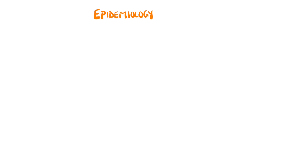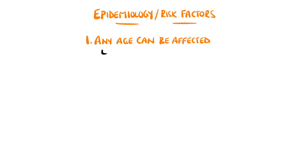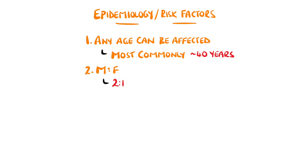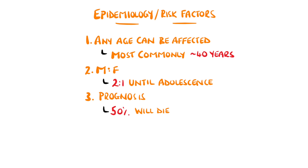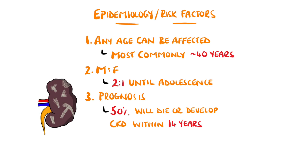Although any age can be affected, it is more common in adults, particularly around the age of 40, than in children. However, in children, males are affected around twice as commonly as females, but this difference seems to even out after adolescence. The prognosis depends on age and the underlying cause, and it is thought that around 50% of people with nephrotic syndrome will die or develop CKD within around 14 years.